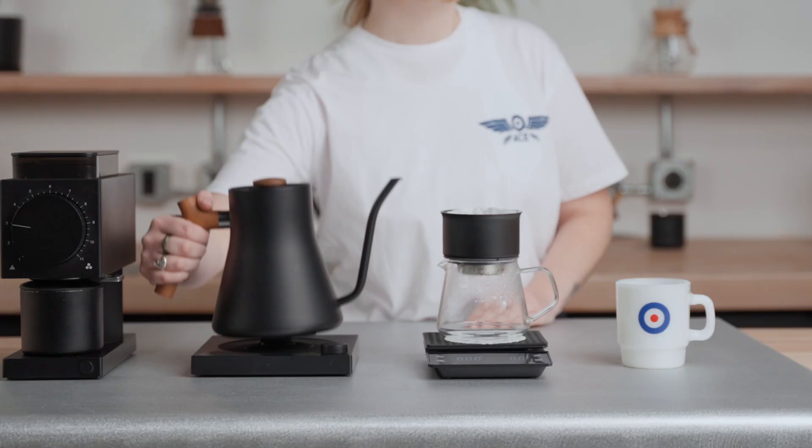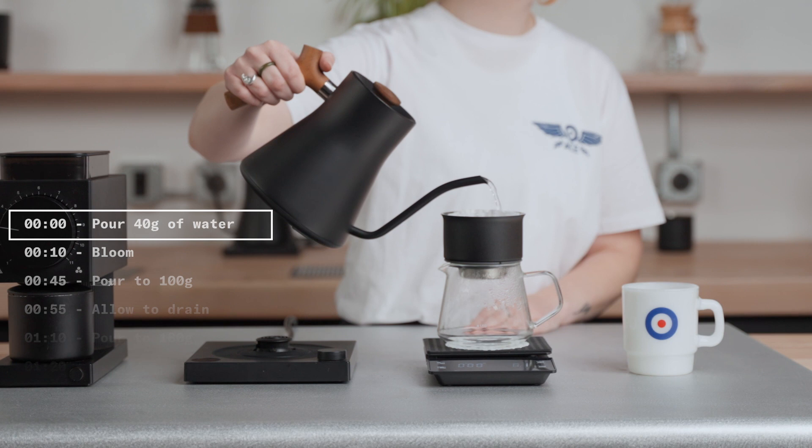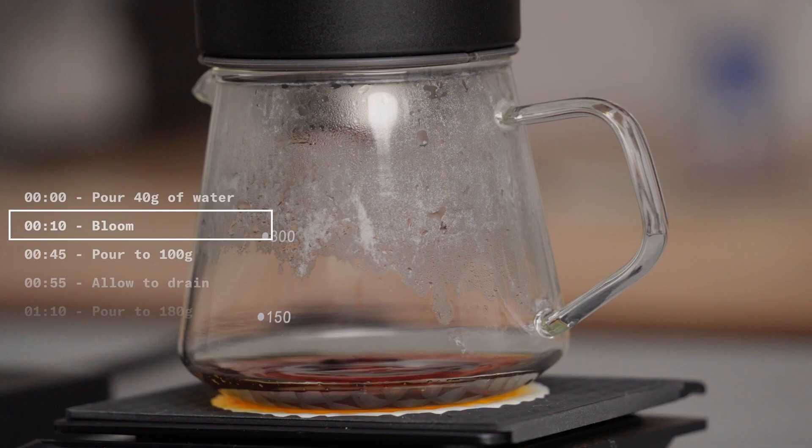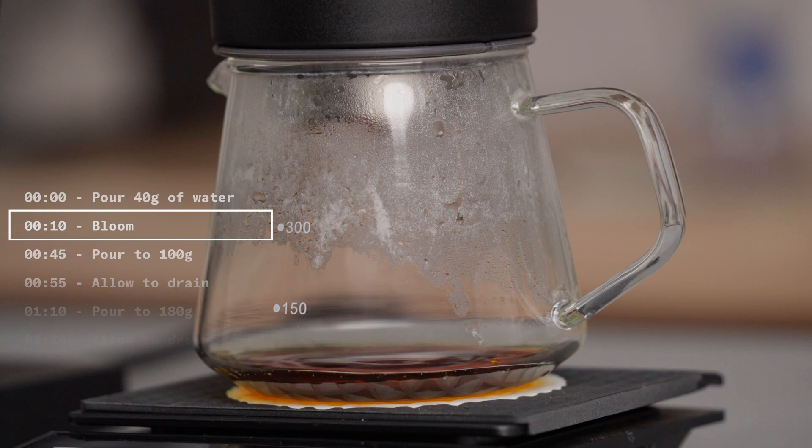We will bloom the coffee by adding 40 grams of water. Let it bloom for 45 seconds. The reason for the prolonged bloom time is the brewer's inherent design. Because the Fellow Stag is a flat bottom brewer, it becomes slightly more restricting than a conical brewer.